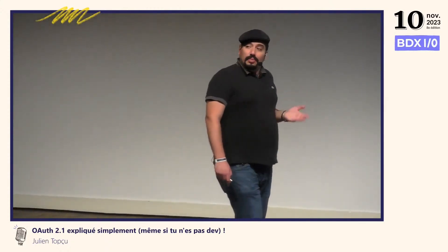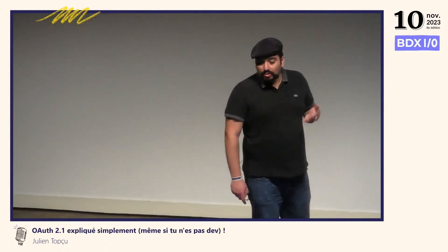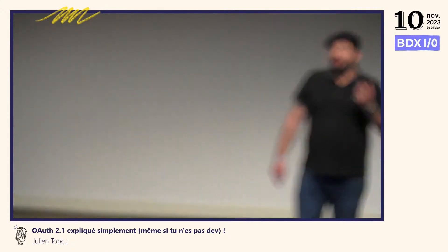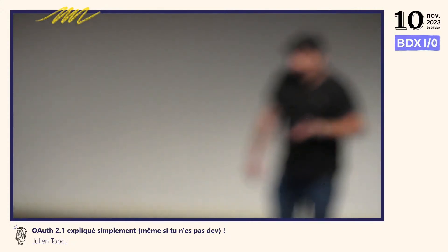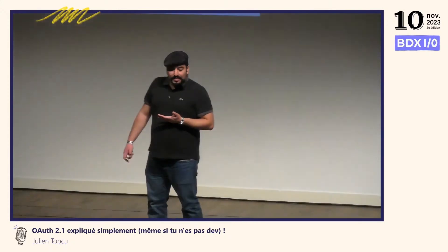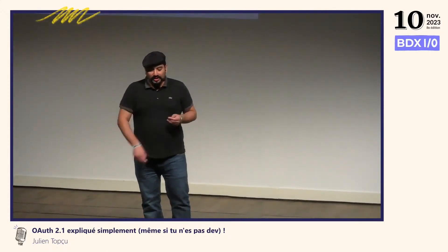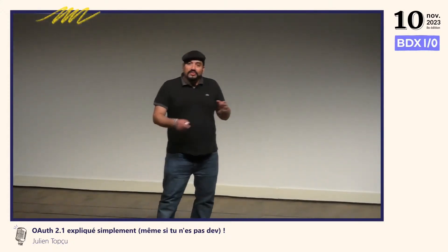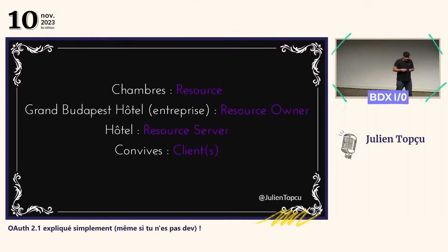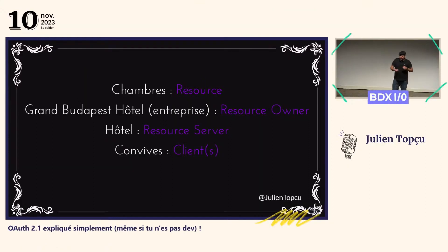C'est un problème que OAuth 2 vise à résoudre. Pour vous expliquer comment on résout ce problème, on va se repositionner dans l'hôtel, parce que j'ai quelques mots de vocabulaire à vous donner. Si vous vous rappelez mon scénario, mes convives tentaient d'accéder aux chambres. Donc, les chambres, c'est ce qu'on appelle les ressources.